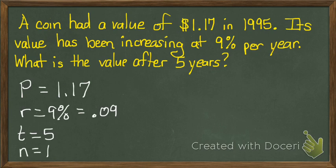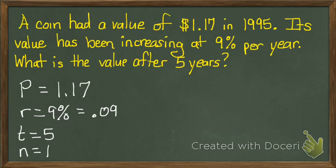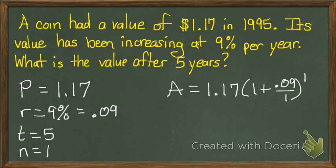And then I'll just plug everything into the formula that you previously wrote on your paper. So it will be A equals 1.17 times 1 plus 0.09 over 1 to the power of 1 times 5. And when I type all of that in the calculator, I'll get 1.800.